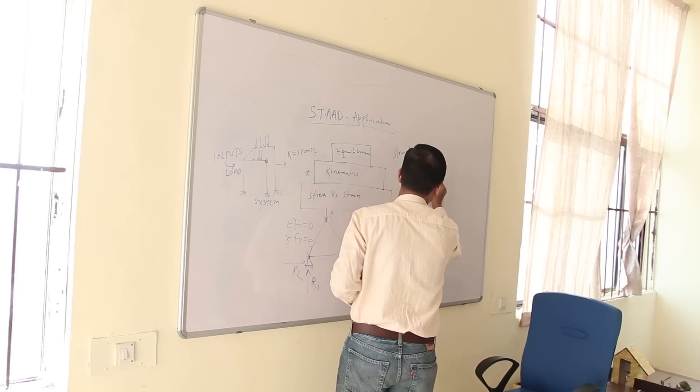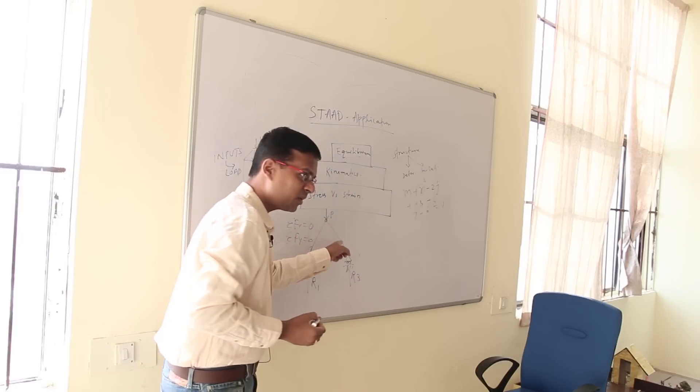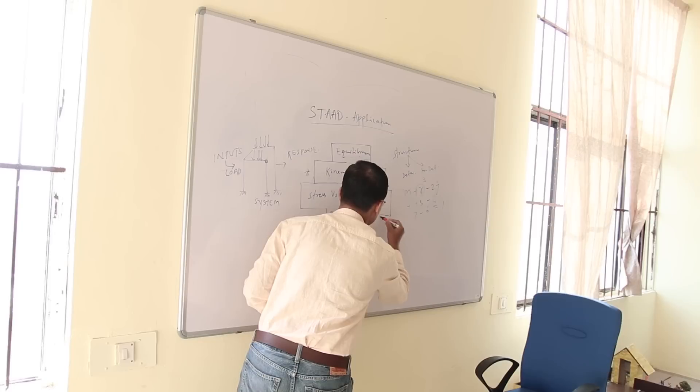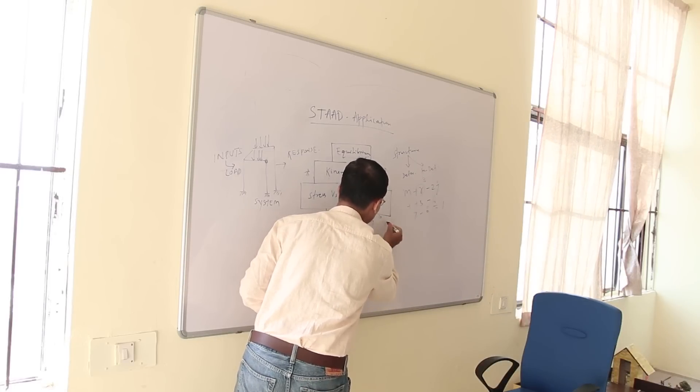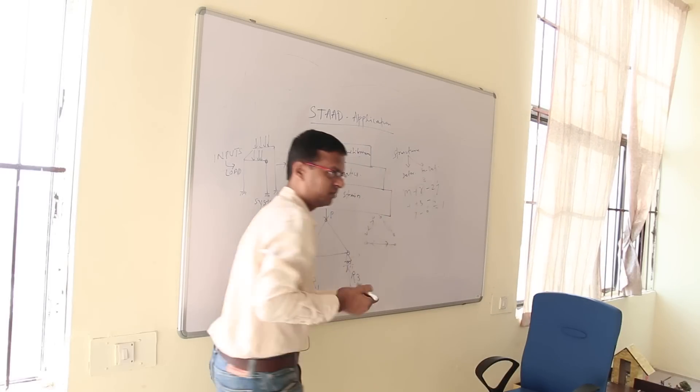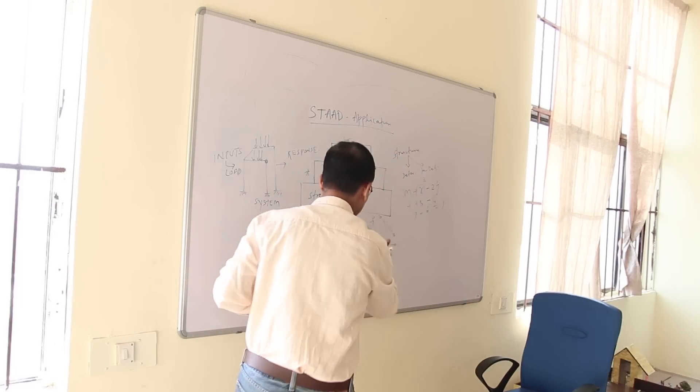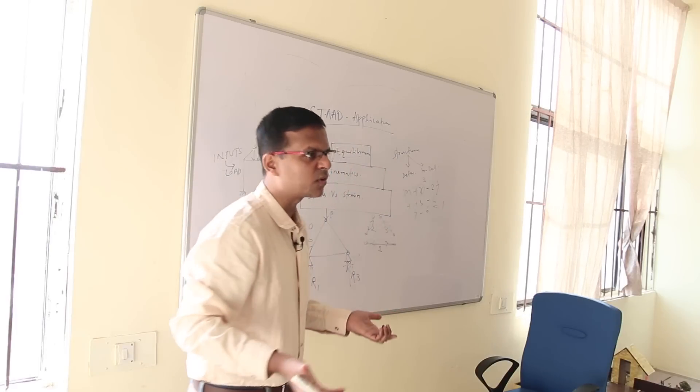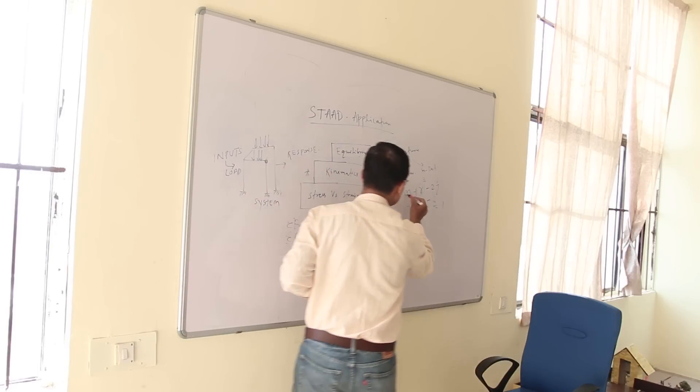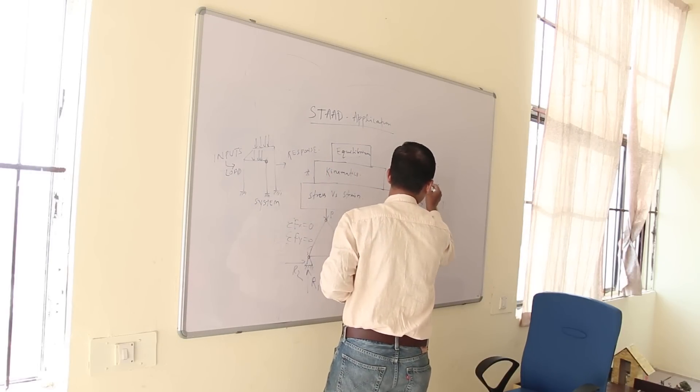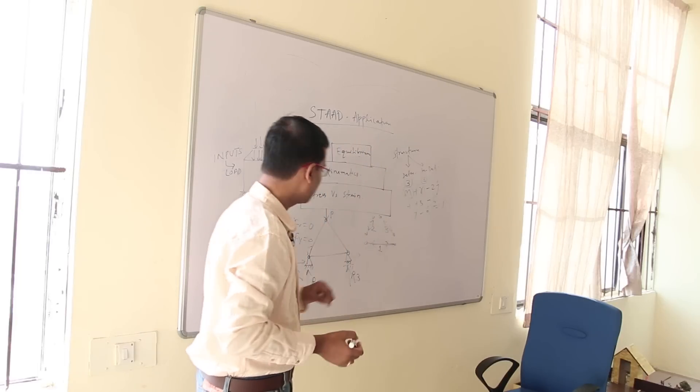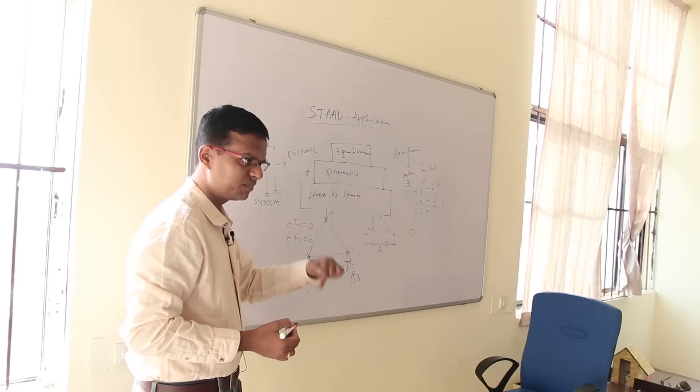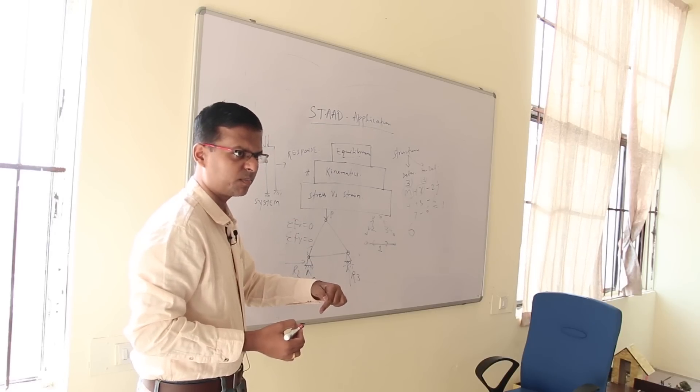What about the member force? Each member if you discretize here or maybe discretize here, maybe discretize here, this is subjected to only 2 loads, axial direction, each are equal and opposite. So this member force 1, 2, 3, this 3 also not known to me. That means this member force also 3 and this is 3 plus 3, 6. That means 6 unknowns are there in this particular equation. What about the known condition? How many equations I can solve for this?